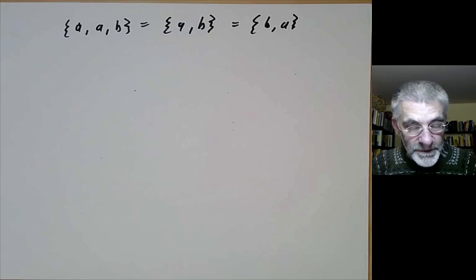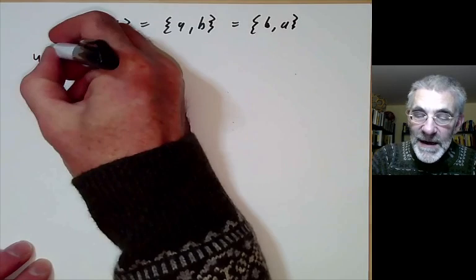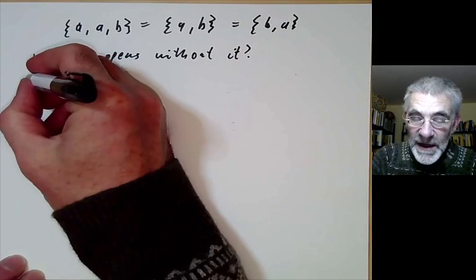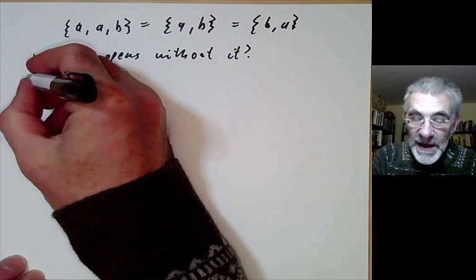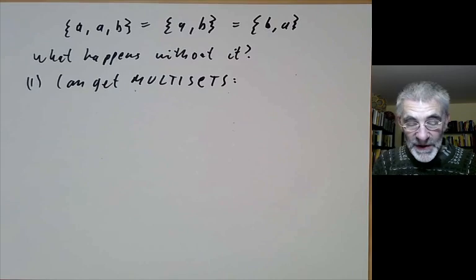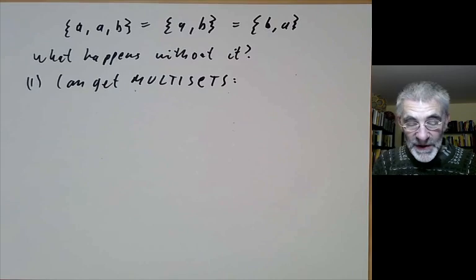It may become clearer to explain what extensionality does if you look at what happens without it. So suppose we try and develop set theory without the axiom of extensionality. Well, first of all we can get multisets. So a multiset is sort of like a set except you allow several copies of the same element.